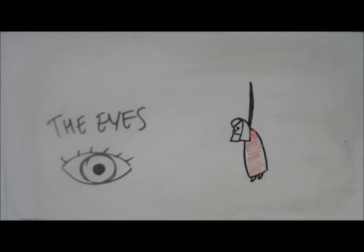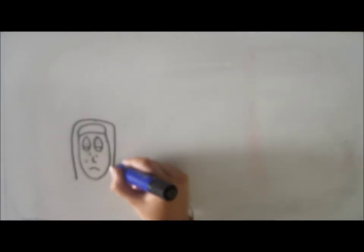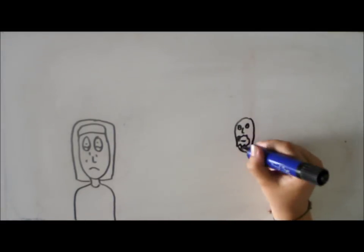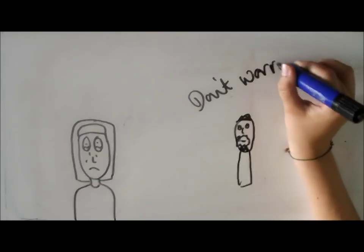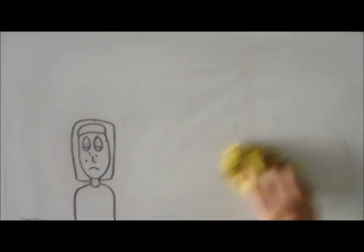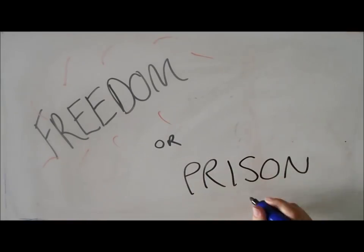Offred goes home to find that Serena has found out about her trip to Jezebel's with the commander and she is sent to her room with the promise of punishment. She sees that The Eyes have arrived but Nick tells her that it's just Mayday, disguised as The Eyes coming to rescue her. Offred leaves with them but she doesn't know if she can trust Nick so she might be going to freedom or prison.